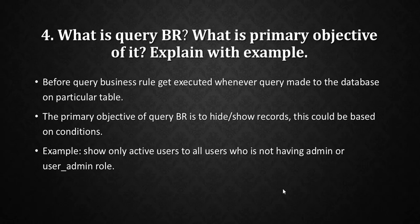The next important question is: what is a before query business rule and what is its primary objective? The before query business rule gets executed when a query is made to the database on a particular table. Its primary objective is to hide or show records based on a condition. For example, show only active users to users who do not have the admin or user_admin role.